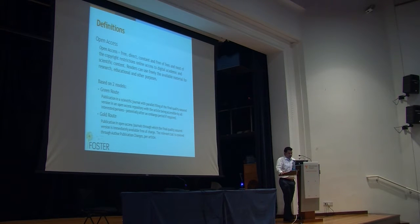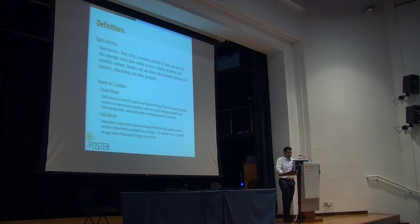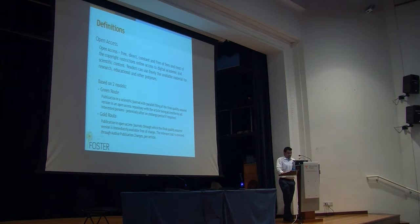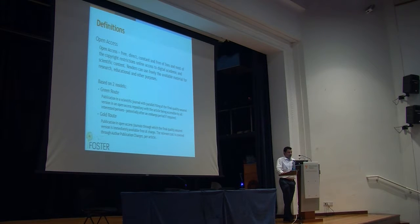Open Access is based on two models. The Green Route, which is publication in a scientific journal with parallel filing of the final quality-assured version in an Open Access repository, with the article being accessible by all interested persons, potentially after an embargo period if required.